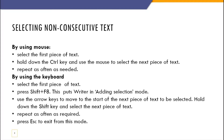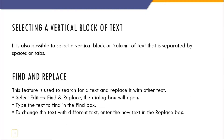Selecting a vertical block: it is possible to select a vertical block or column of text that is separated by spaces or tabs. To do this, drag the mouse from the first position to the last position and the whole column will be selected.